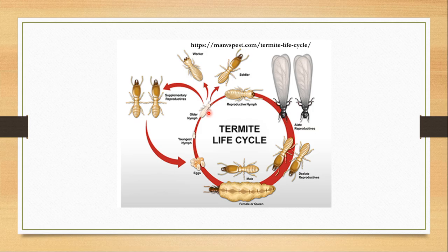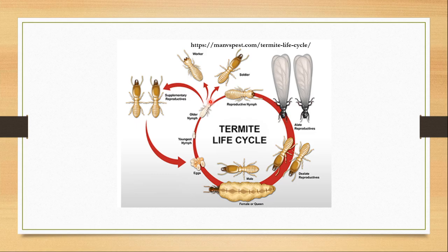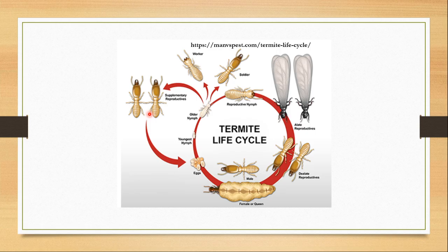The nymph will become the reproductive — whose main function is mating and continuing the family — or the soldier whose function is protection of the colony, or the worker who will help in building or cleaning the nest, feeding the brood, etc. The nymph can also become supplementary reproductives. These supplementary reproductives are formed when the primary reproductives die. If a colony loses the primary reproductives, nymphs can become supplementary reproductives which can couple and start laying eggs, and these eggs would have the similar fate.